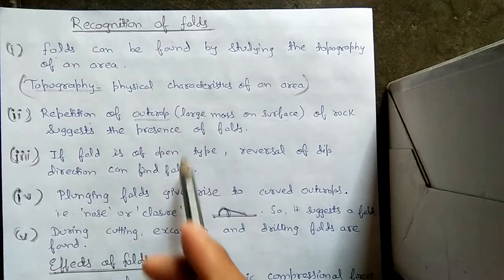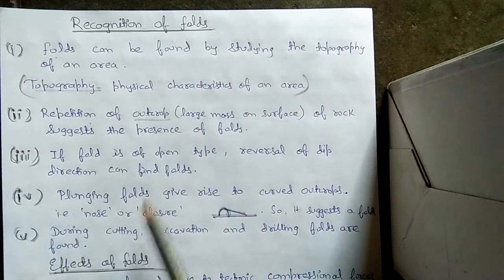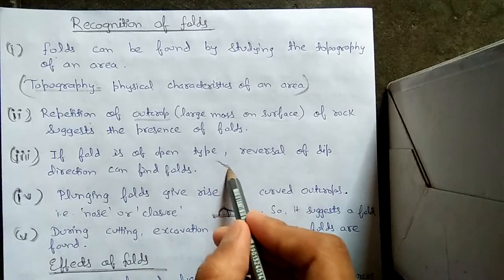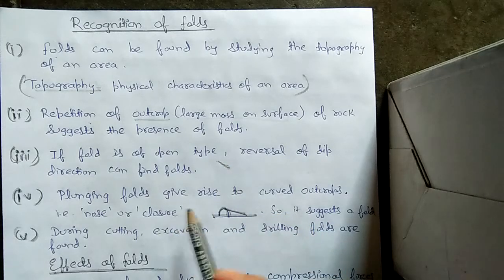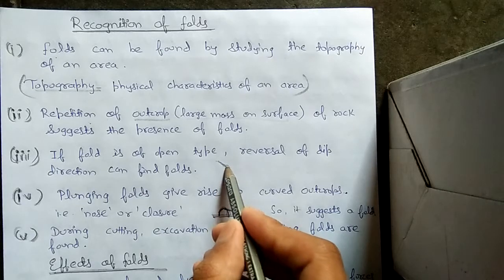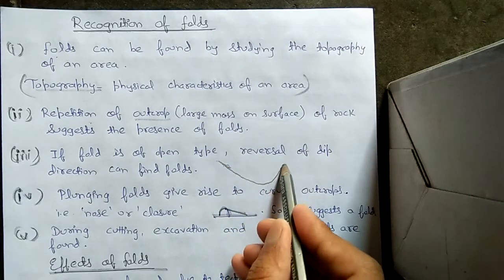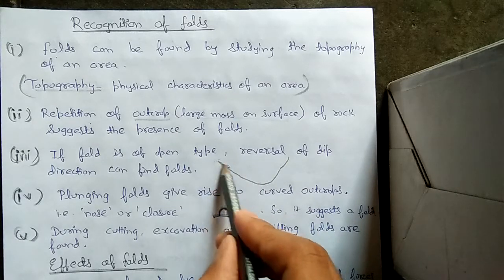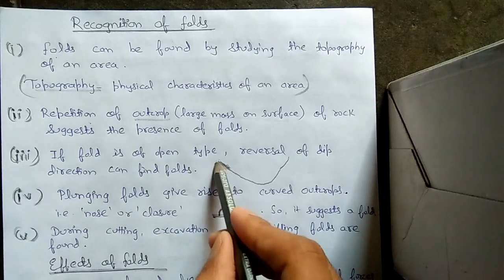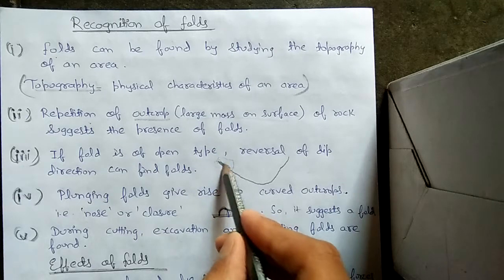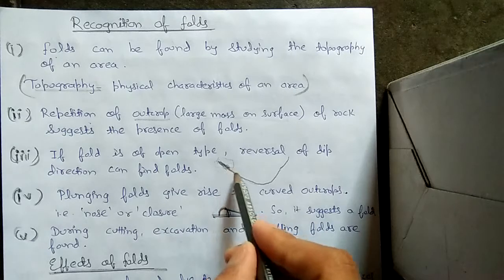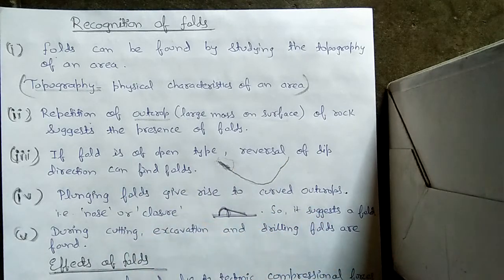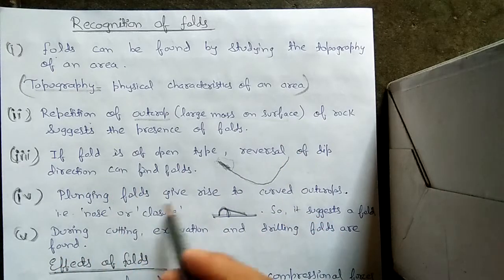The third one is if a fold is of open type. If we see on the surface an area and we somehow find its dip and dig further in that area, we will find a structure. This means if the fault is open type, then by reversing the dip - we had an area, by calculating its dip, we reversed the dip and started digging in its dip direction and found an open type of fold. By reversing the dip direction we can find out folds, but which kind of fold? Open type fold.